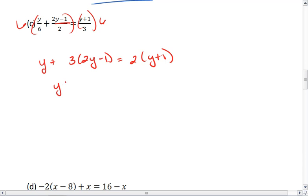We can distribute and then simplify. So we get 7y minus 3 equals 2y plus 1. We can move like terms to the other side. So we get 5y on one side and 5 on the...